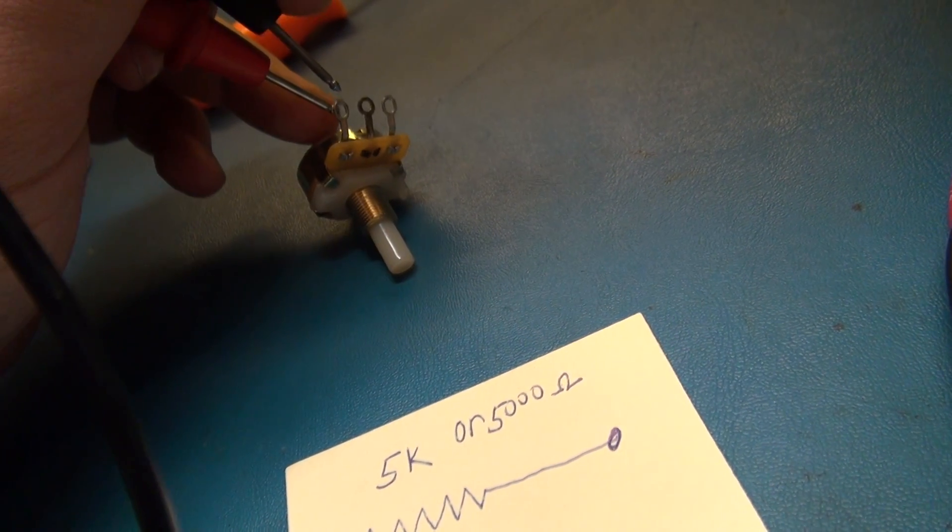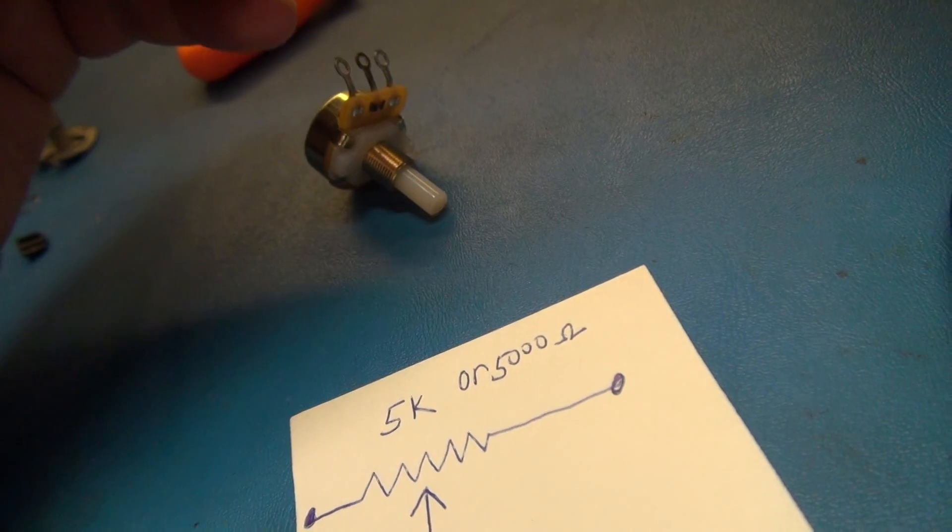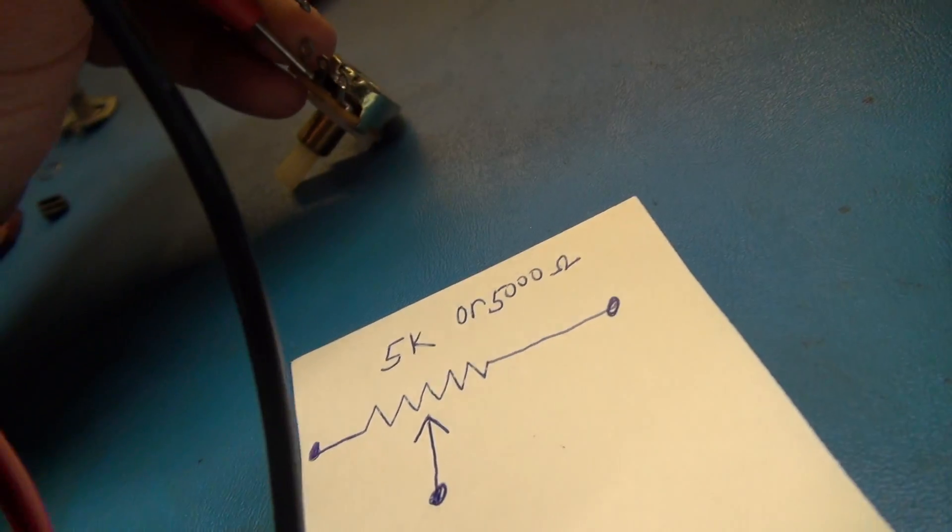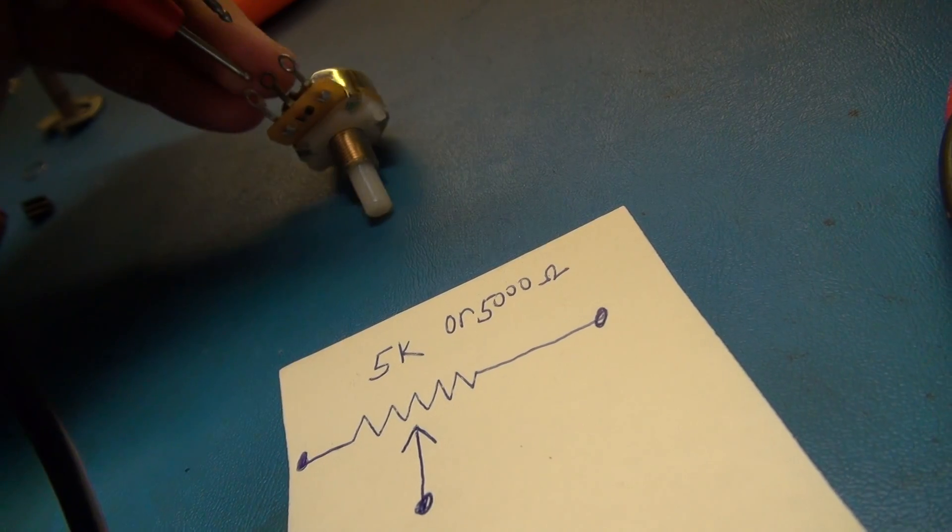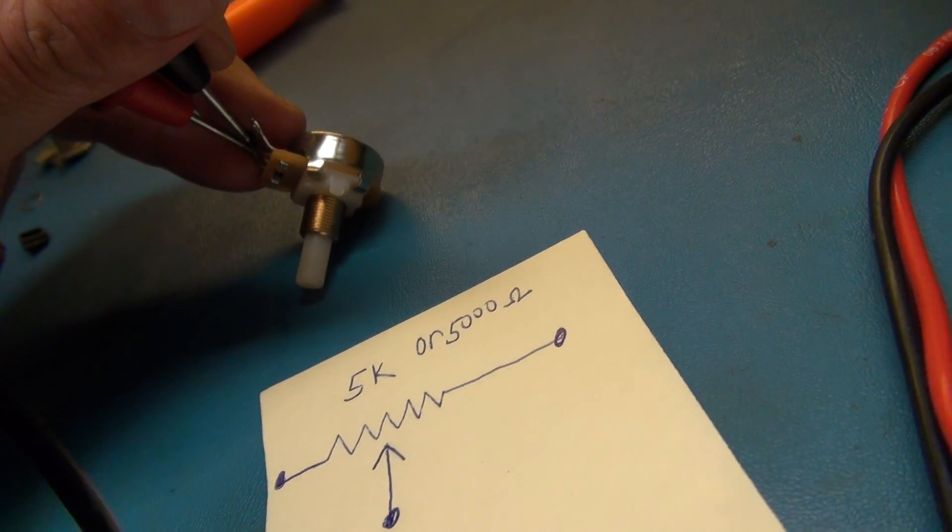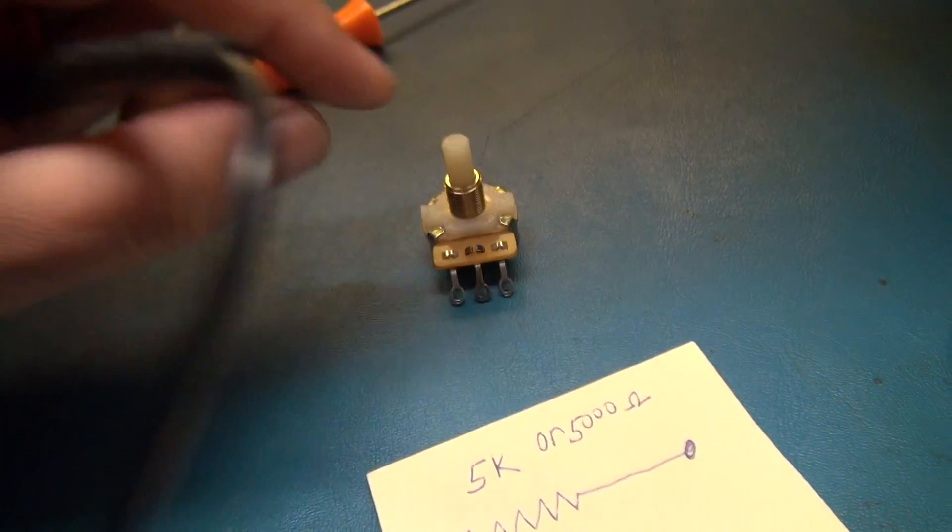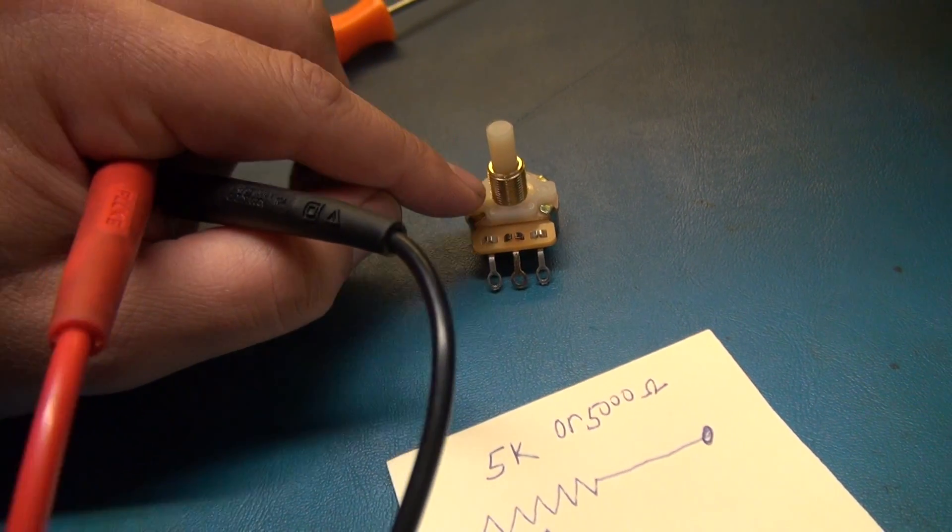If I go from one point to the center, where I have the potentiometer centered right now, you see it's half - it's about 2.5k.